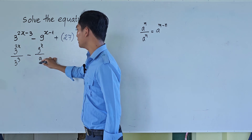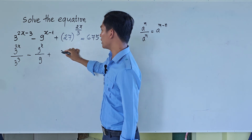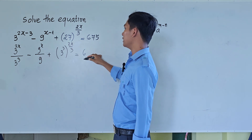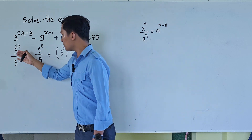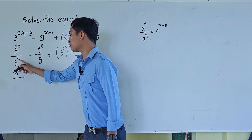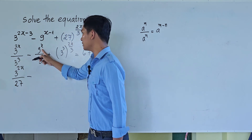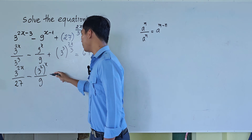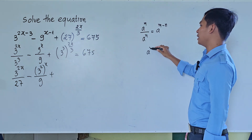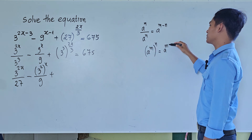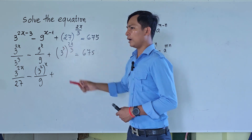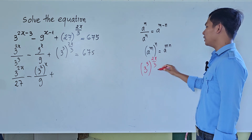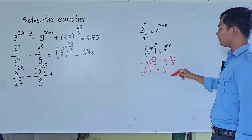Also, 27 can be written as 3 to the power 3, so 27 to the power 2h becomes 3 to the power 3, whole to the power 2h, divided by 3. Now we apply the formula: a to the power m, whole to the power n, equals a to the power m times n. So 3 to the power 3, whole to the power 2h, divided by 3, equals 3 to the power 3 times 2h, divided by 3. Simplifying with 3, we get 3 to the power 2h.